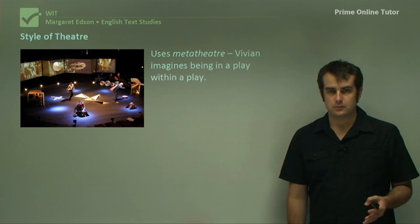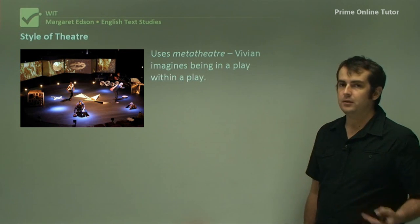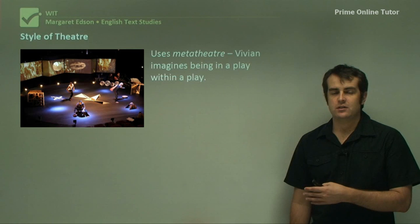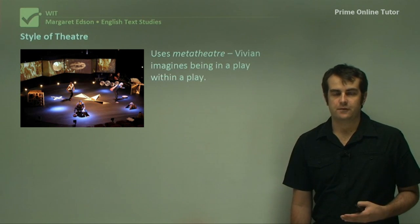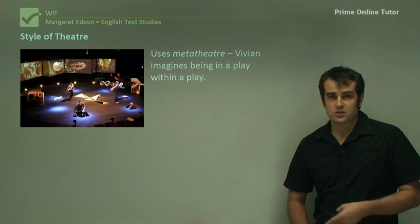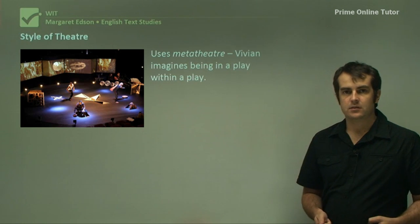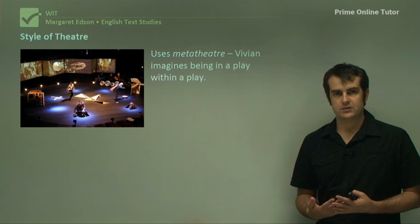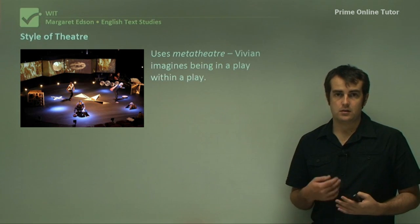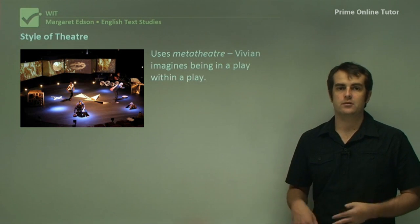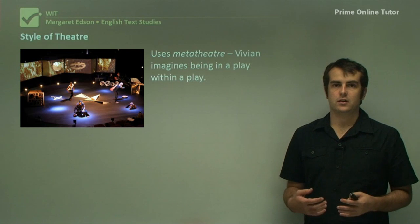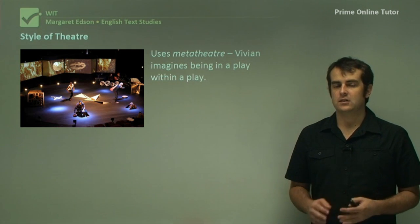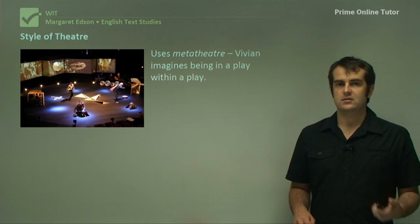The play also uses meta-theatre, a technique essentially about being in a play within a play. In that particular scene where Vivian says, 'I wonder what I would write if I was writing a play based on this,' it reinforces how language is able to make a statement that connects not only her experience, but also how literature does that job — how literature is able to convey such emotions and feelings. The fact that a scholar of language doesn't have the answer to that shows how very difficult it is to convey those sensations into words.